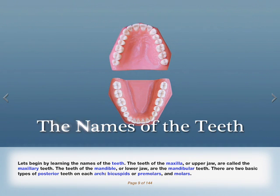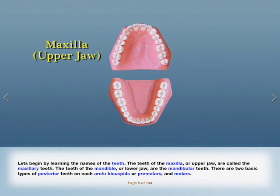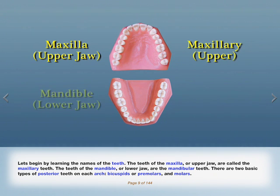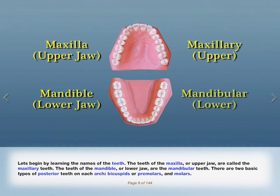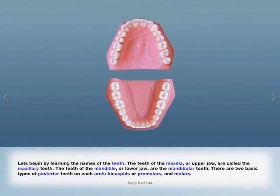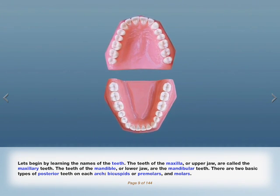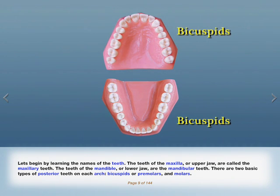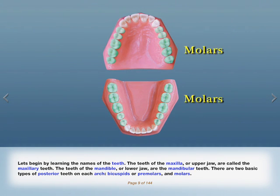Let's begin by learning the names of the teeth. The teeth of the maxilla or upper jaw are called the maxillary teeth. The teeth of the mandible or lower jaw are the mandibular teeth. There are two basic types of posterior teeth on each arch: bicuspids or premolars and molars.